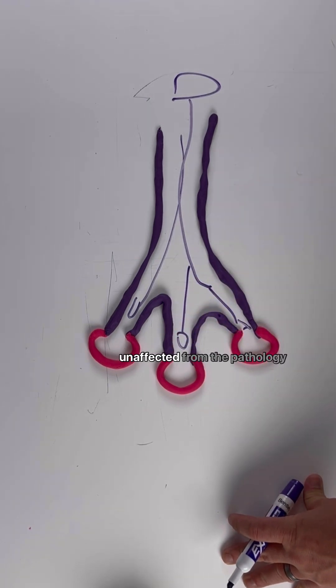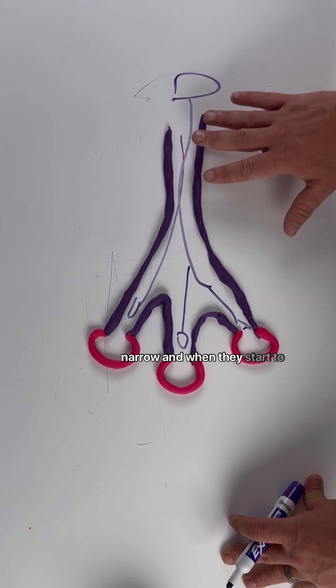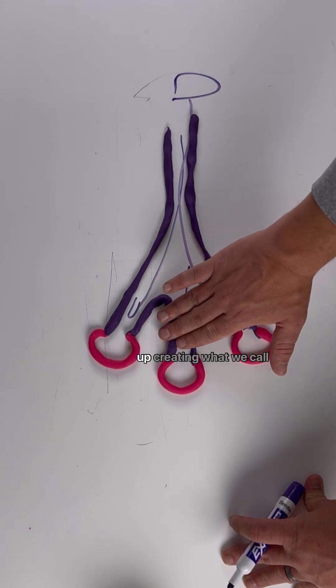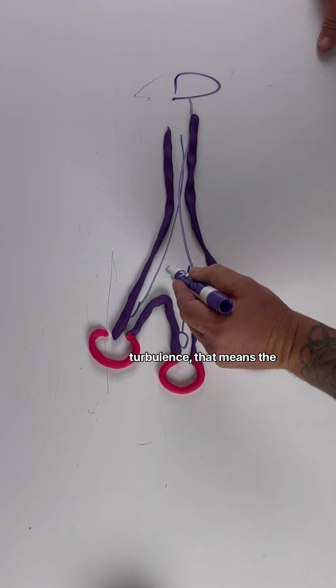When they narrow up like so, they end up creating what we call turbulence. When we create turbulence, that means the air running through this is kind of like running through a really narrow straw.